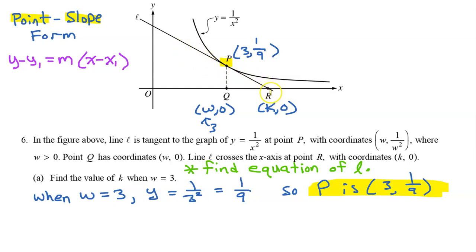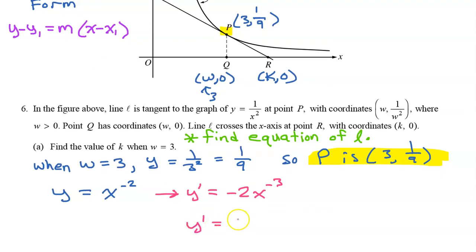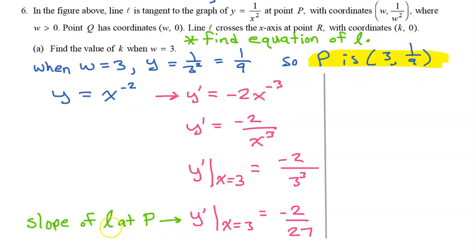The slope of the tangent line is the derivative. The curve shown is y equals 1 over x squared, which I'll rewrite as y equals x to the negative 2 power. Using the power rule, y prime equals negative 2 x to the negative 3 power, or negative 2 over x cubed. At x equals 3, the slope is negative 2 over 27.